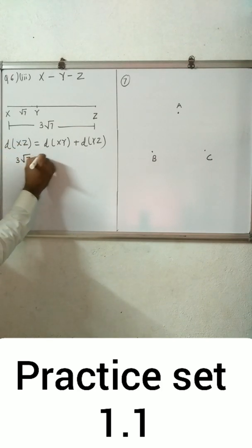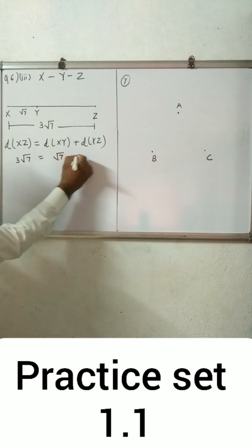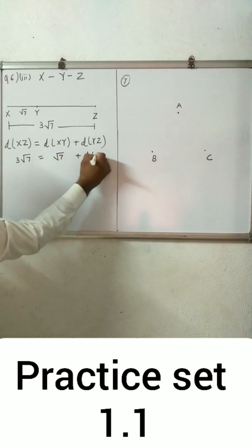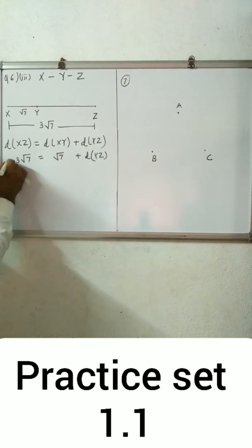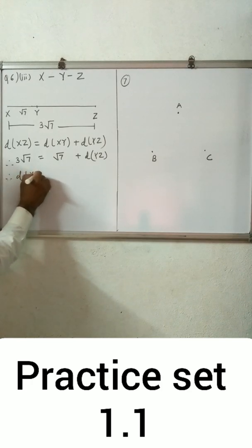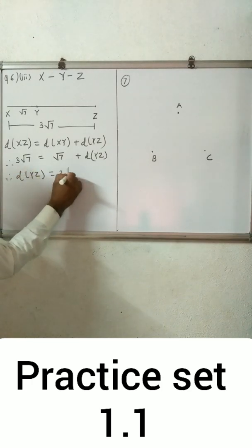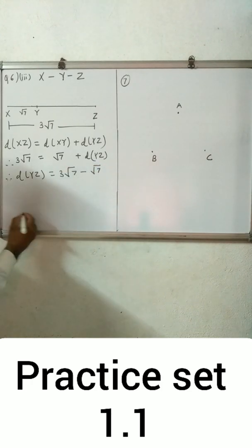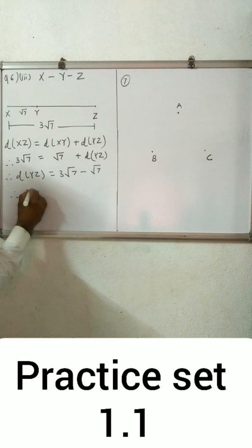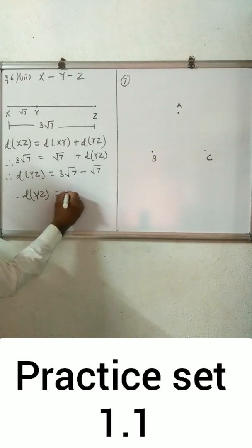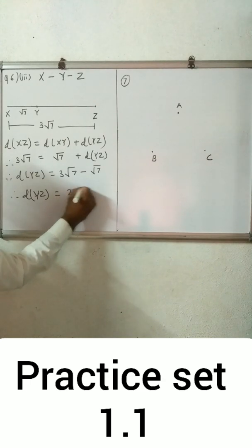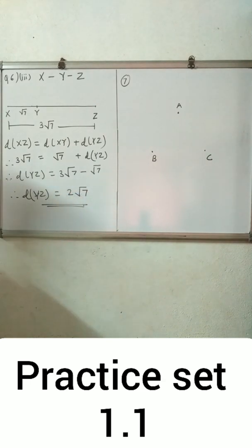Another example involving collinear points: distance XZ equals root 7. Distance XZ equals distance XY plus distance YZ, so distance YZ equals 3 root 7 minus 1 root 7 = 2 root 7. Distance YZ is 2 root 7.